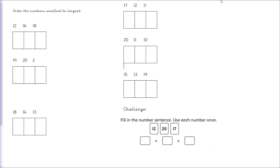In your home learning packs you are going to find this worksheet and you're doing the same as we've done — ordering numbers from smallest to largest. In these three boxes you're ordering with the smallest number first and the largest at the end. Complete all six questions and then you have a challenge to complete. Once you've finished the worksheet, please take a picture and upload it to Class Dojo. I'll see you tomorrow — thank you!